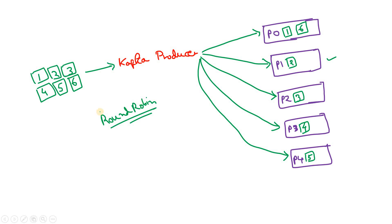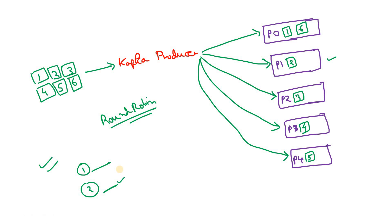There are two major drawbacks to this approach. Number one: it is more time-consuming, because each individual message is being published to a different partition one by one. Number two: it creates a big burden on the broker. The broker must individually send each message to a different partition and then cycle back — which makes it a little expensive in terms of CPU utilization.